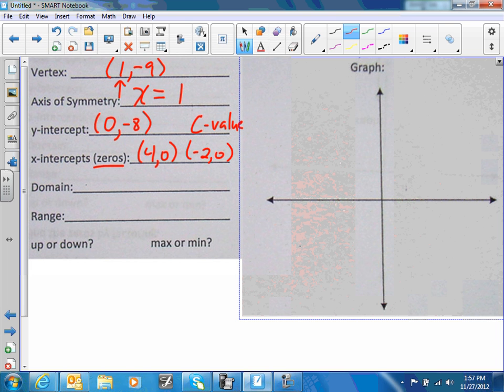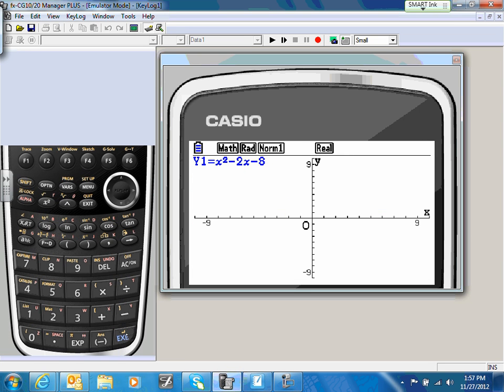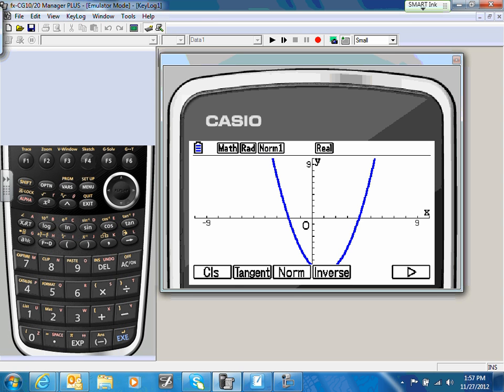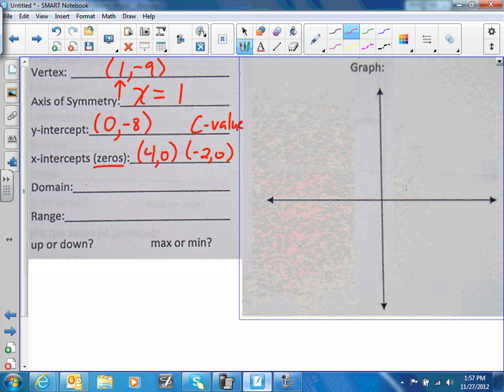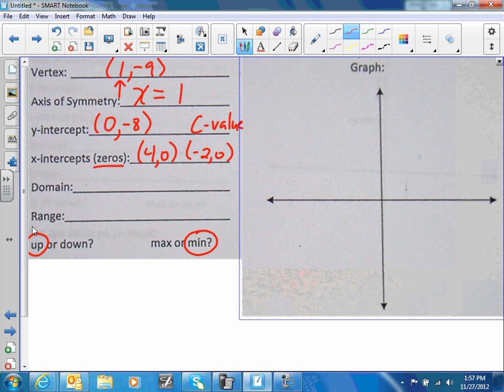If you were to graph this on the calculator, it's going to look something like this. Here's your equation—we're going to go ahead and graph it. Notice this one goes up, so it's going to have a minimum down here at the bottom. It's going to open up and have a minimum.